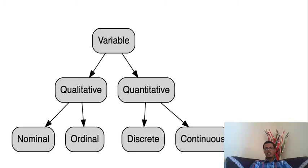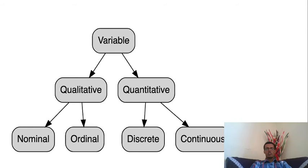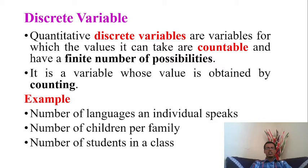Qualitative variables are divided into nominal and ordinal variables, depending on whether order matters. Quantitative variables are divided into discrete and continuous variables. Discrete variables are countable, while continuous variables are measured. This is the basic classification tree for variables.